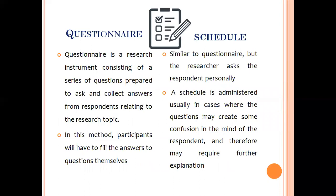Questionnaires and interview schedules are research instruments consisting of a list of questions prepared by the researcher with respect to the subject of interest, and these questions are answered by respondents to generate data. The difference is that in questionnaires the list of questions is filled and answered by the participants themselves, whereas in an interview schedule the same questions are filled by the researcher based on the responses given by the respondents.